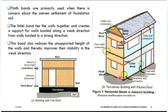One is the plinth band at the floor level, indicated by brown color — it connects the building at the bottom of the structure. The second band is at the floor level between first and second floor. At the lintel level, where you have the lintel beam, it is connected to the outer side of the building, completely connected with the lintel beam.